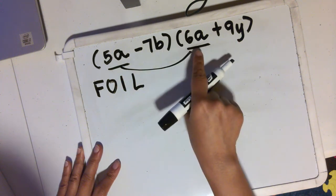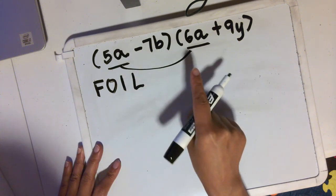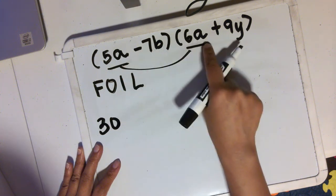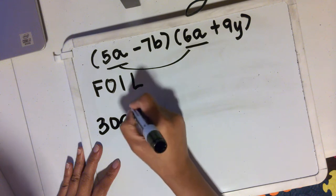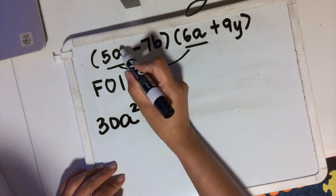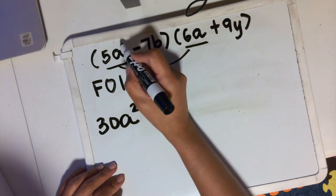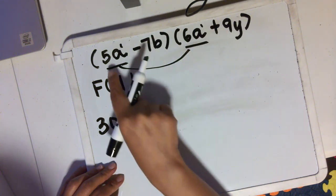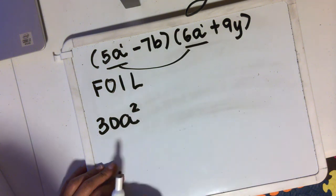5a times 6a is the same as 5 times 6, which is 30, and then a times a is a squared. You copy the common base and add their exponents. If you don't see a number on the upper right corner, that means the exponent is 1. So 1 plus 1 is 2. So 5a times 6a is 30a squared.